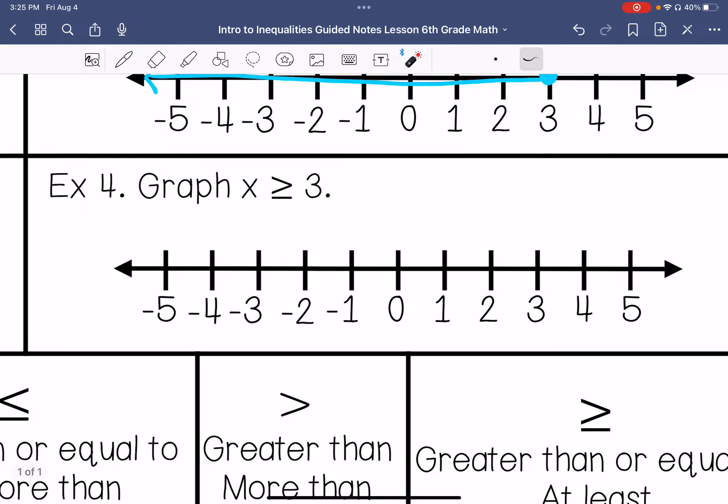Graph x is greater than or equal to 3. So I go to 3, do a closed circle, and then it's greater than or equal to, so I'm going to go this direction.